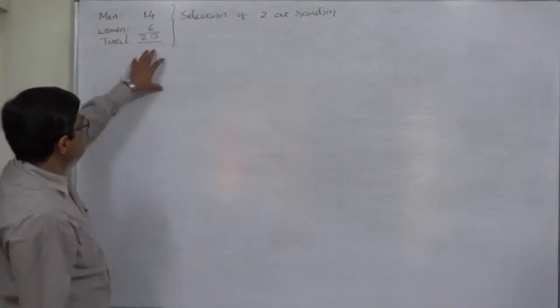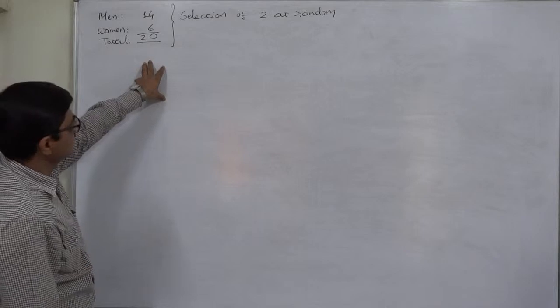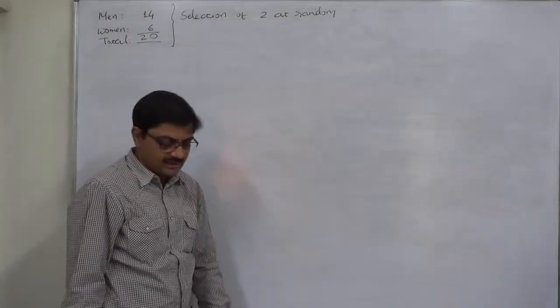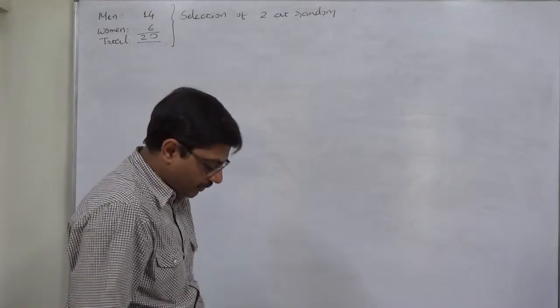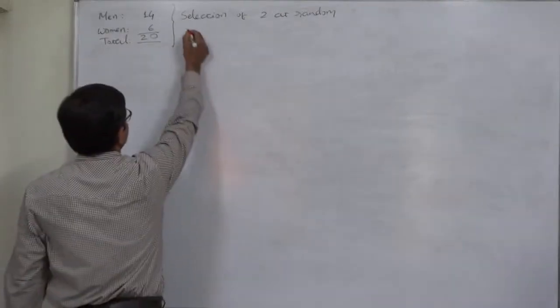Total there are 20 eligible and equally qualified persons and two of them are to be selected at random. That means first of all we have to find the total number of possible cases.